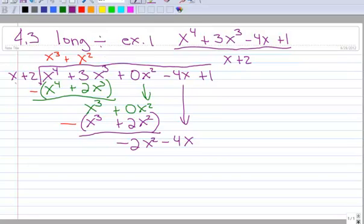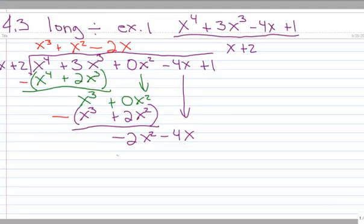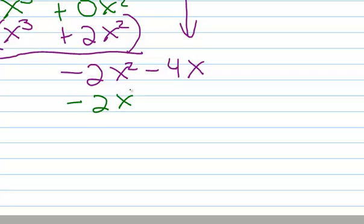Something up here. Times x gives me negative 2x squared. So that's going to be minus 2x. So let's multiply it out. Negative 2x times x is negative 2x squared. Negative 2x times 2 is going to be negative 4x.